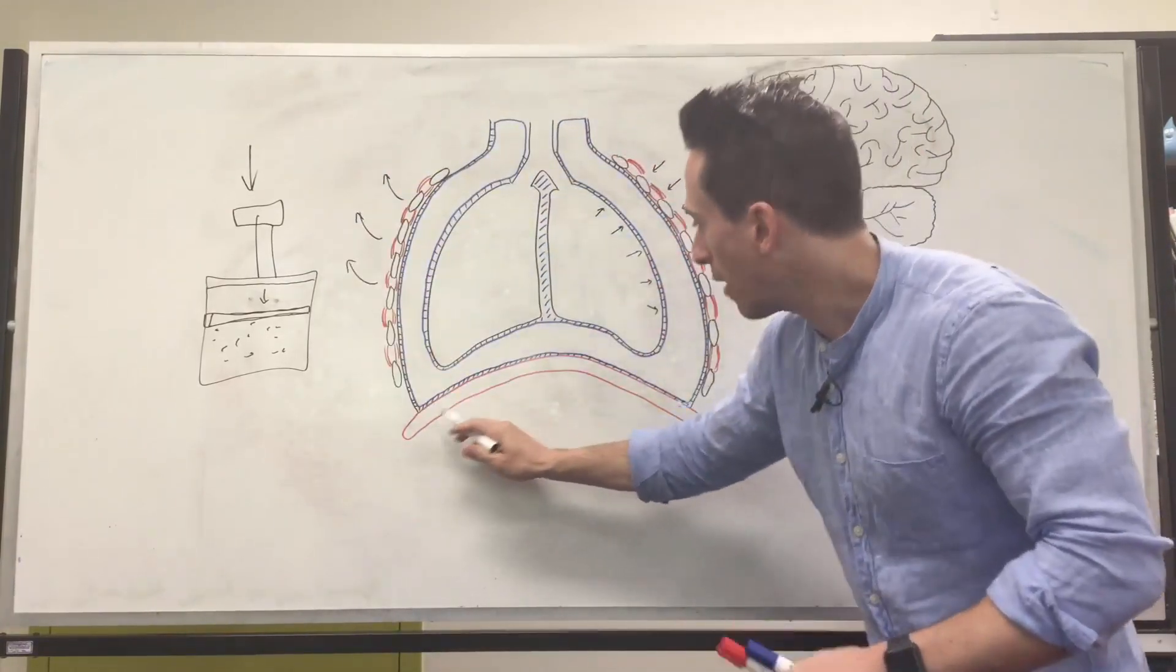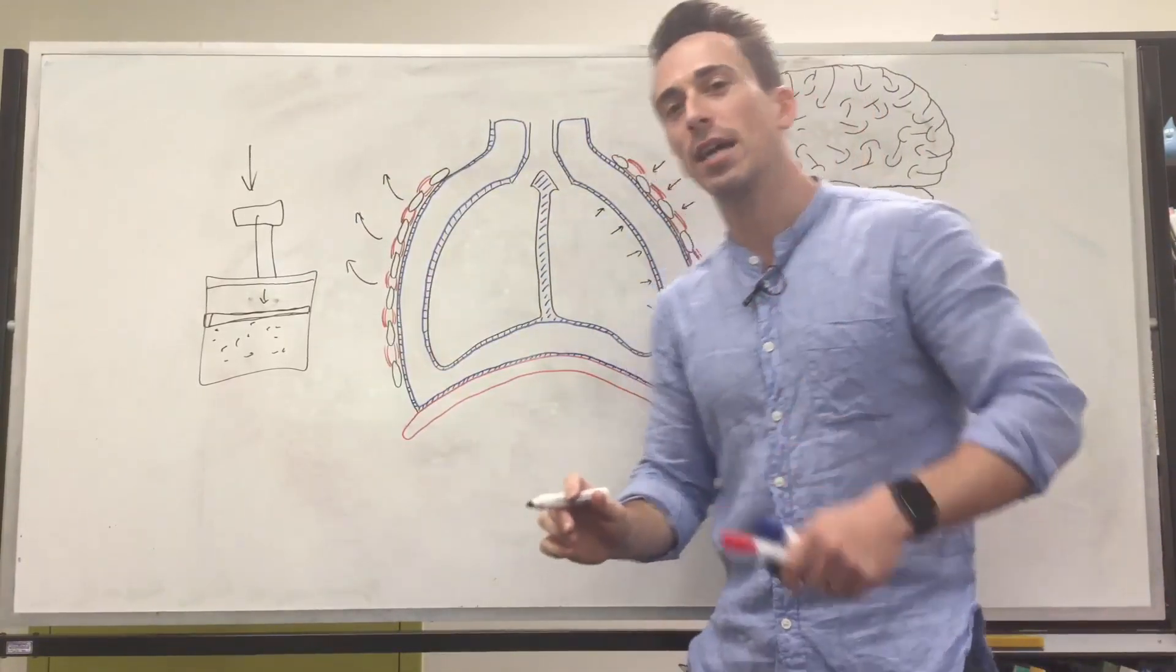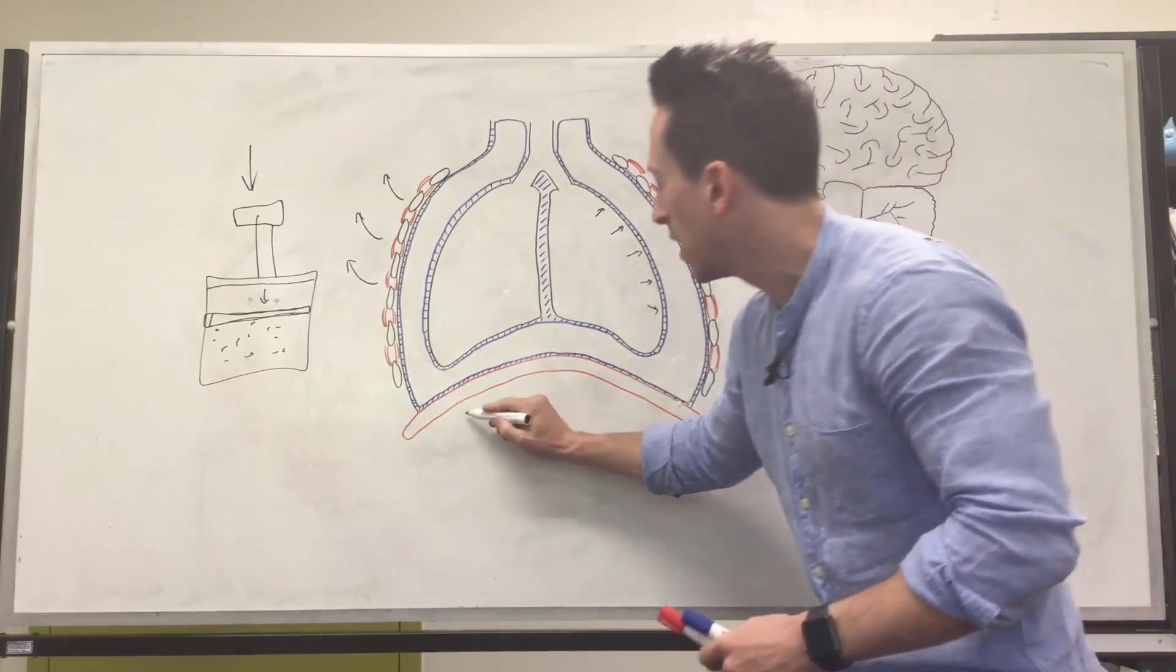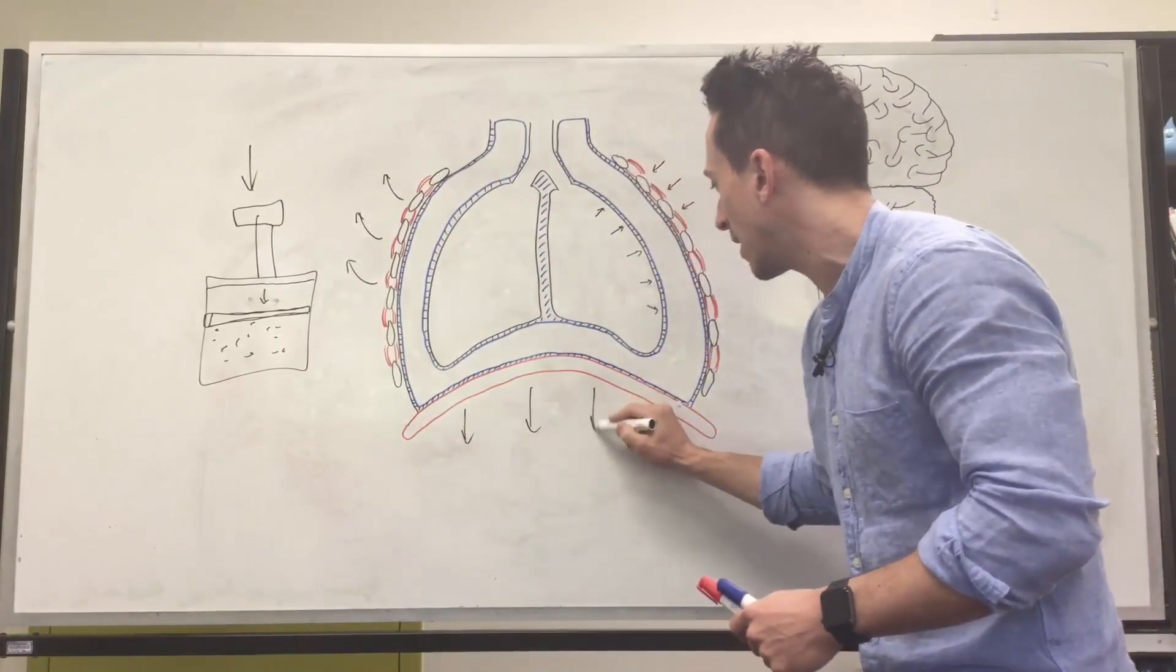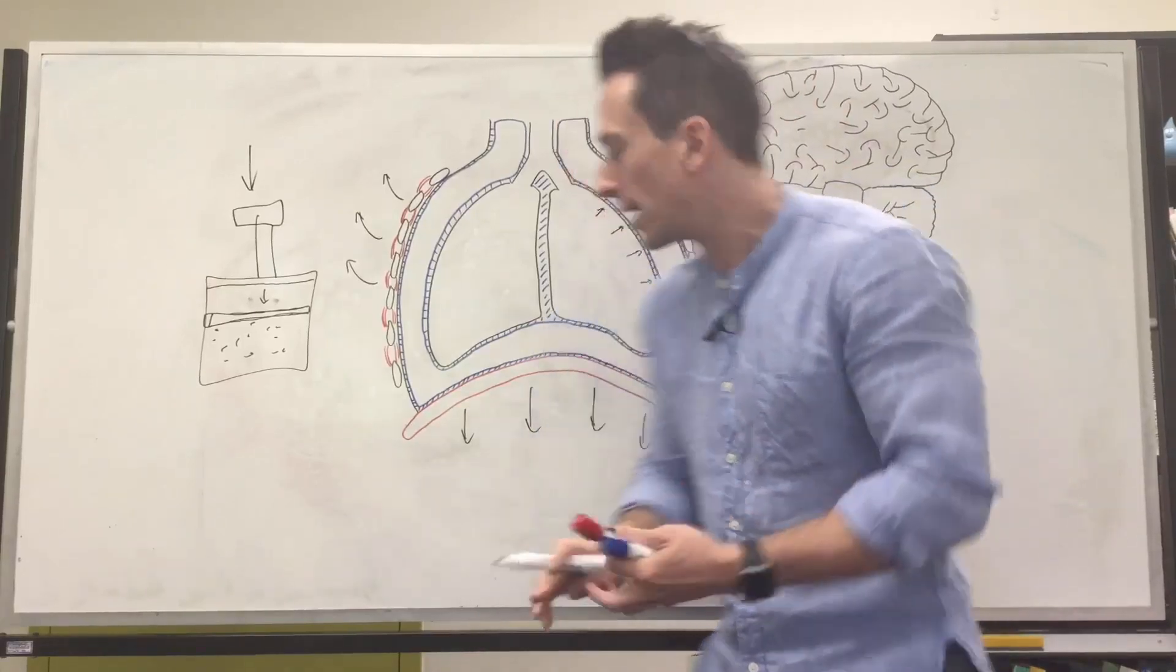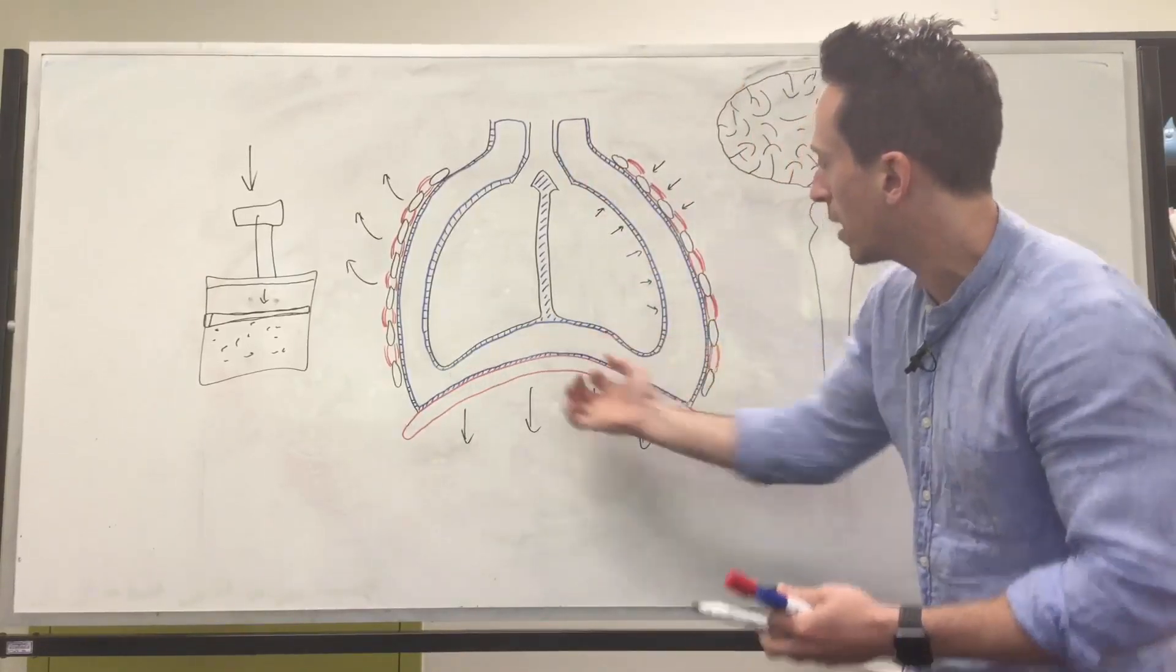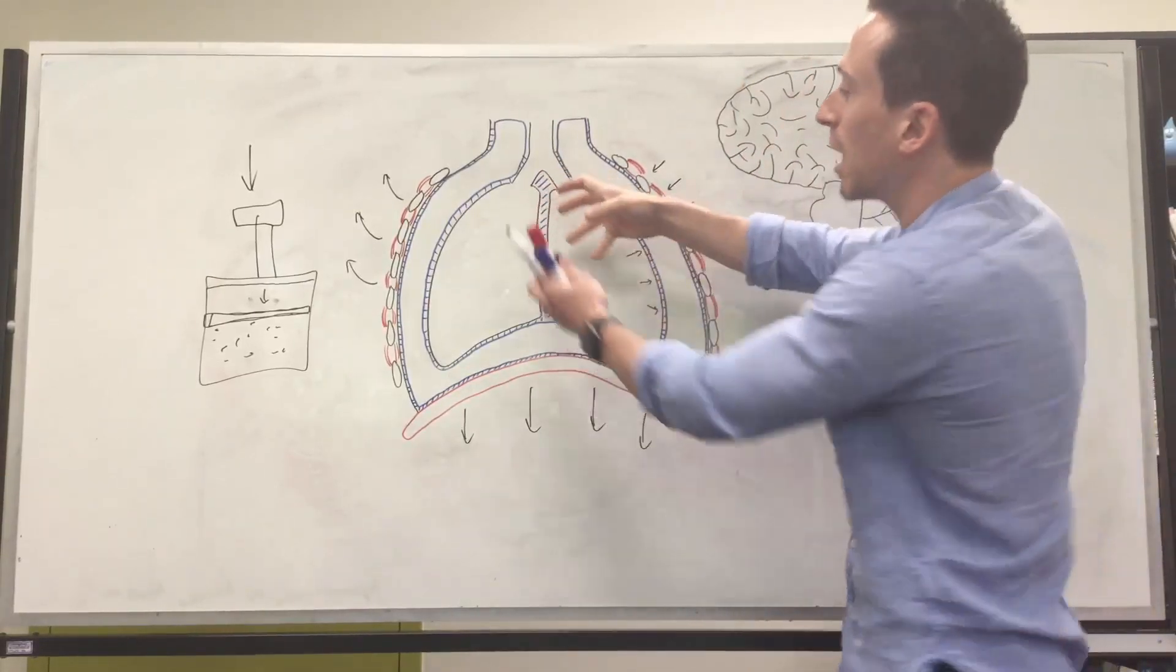Also our diaphragm as well, if we're to contract our diaphragm, which when it's relaxed is dome shaped, it pulls downwards and flattens out. If it pulls downwards and flattens out, it's also pulling on that pleural membrane, which means it's pulling on the lungs and the lungs open up.